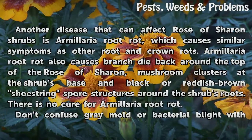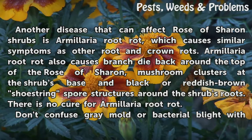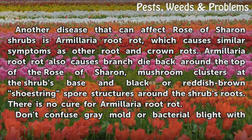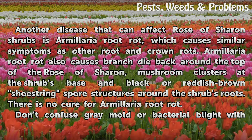Another disease that can affect Rose of Sharon shrubs is Armillaria root rot, which causes similar symptoms as other root and crown rots. Armillaria root rot also causes branch dieback around the top of the Rose of Sharon, mushroom clusters at the shrub's base, and black or reddish-brown shoestring spore structures around the shrub's roots. There is no cure for Armillaria root rot.